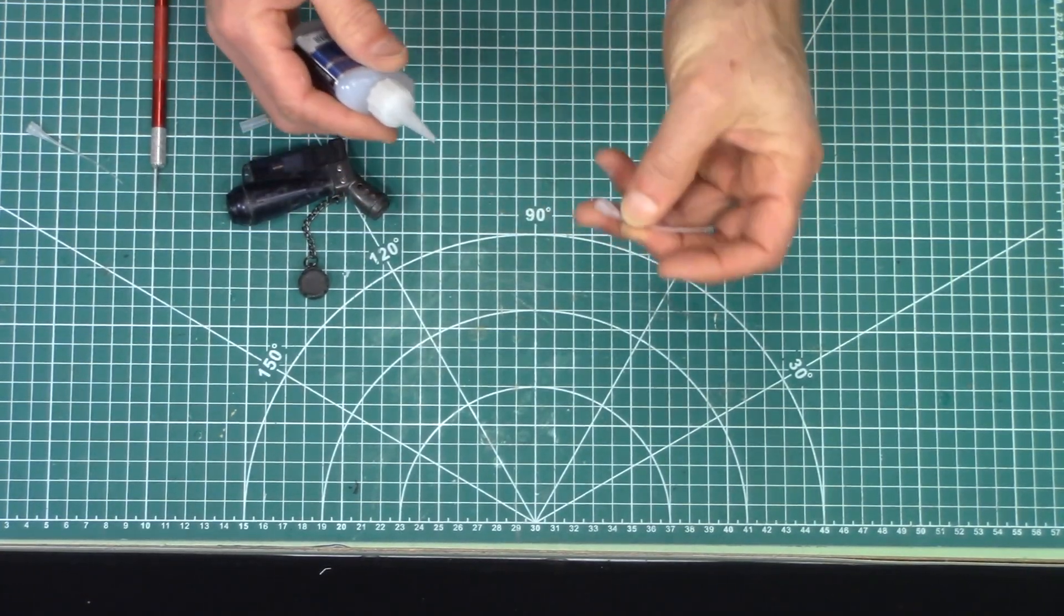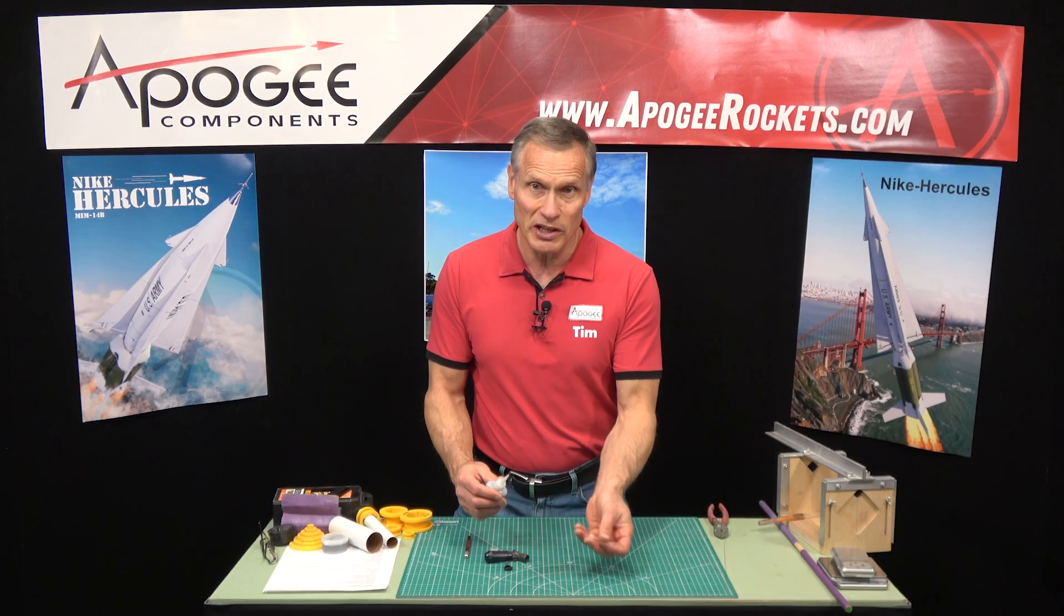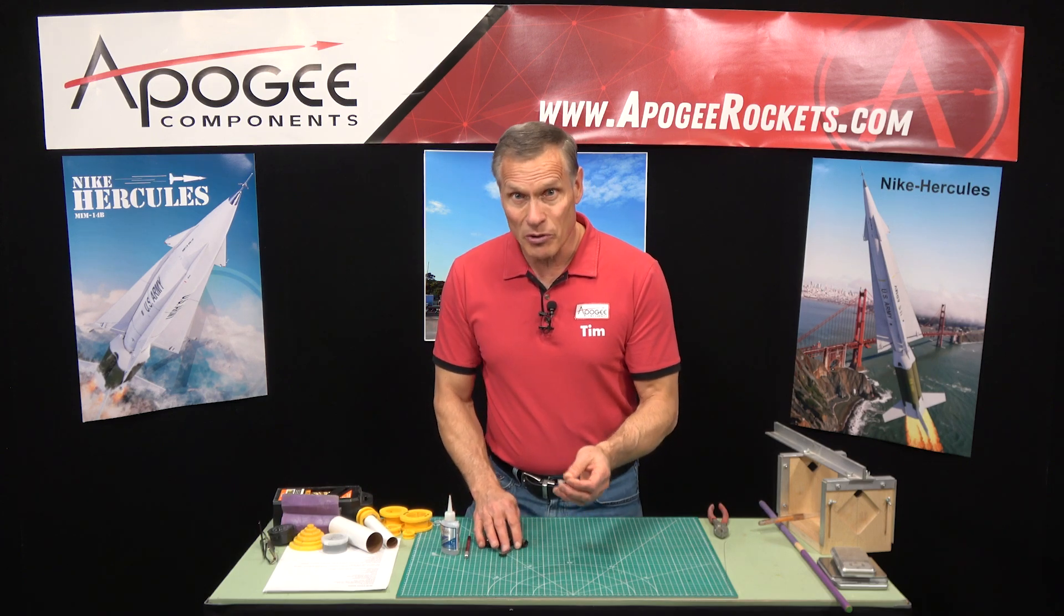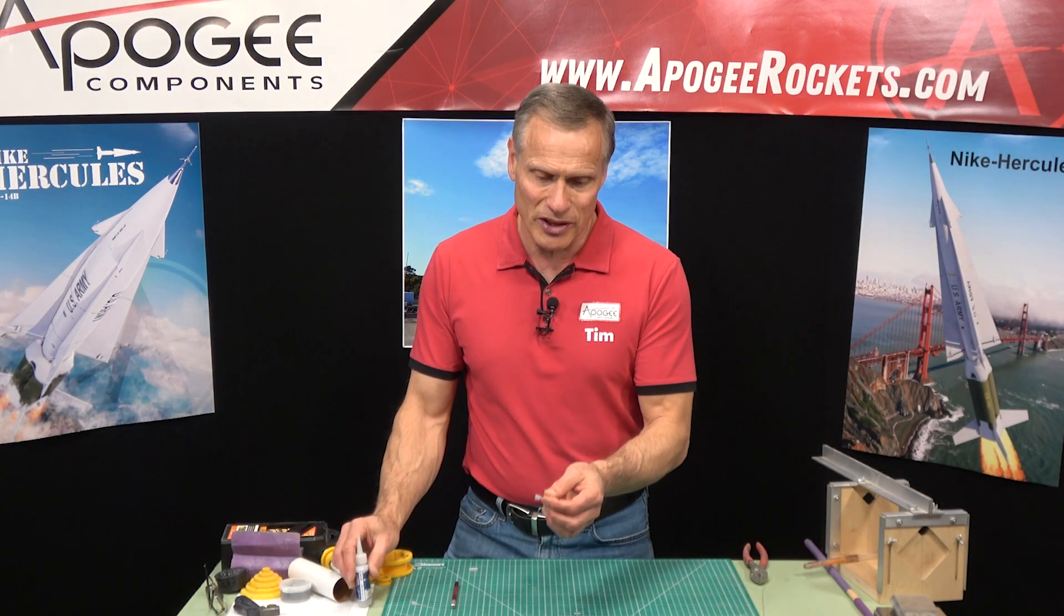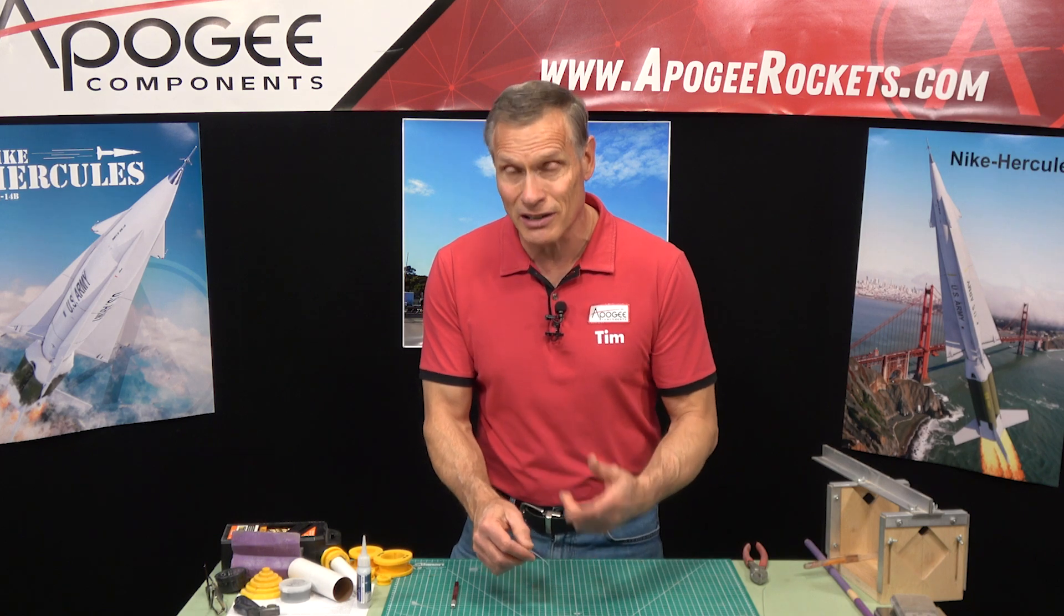So do that the first thing when you get them and just throw them in a box and then when you need a glue tip pull it out. The other problem with super glue is that the nozzle is so fine that they can clog.